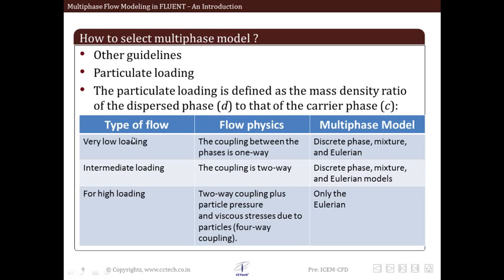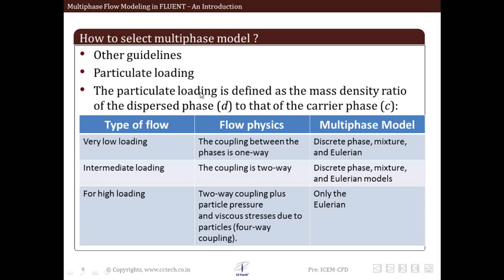Apart from these flow regimes, there are various other guidelines based on some terminologies or basic physics. These terminologies are defined around the term called particulate loading. Particulate loading is defined as the mass density ratio of disperse phase to that of the carrier phase. It gives us an indication of how the coupling is there between the disperse phase and the carrier phase—whether the disperse phase also affects the flow of the carrier phase or the continuous phase. Is this coupling one-way or two-way? And also whether there is interaction between two droplets or two particles or two bubbles of the disperse phase itself.